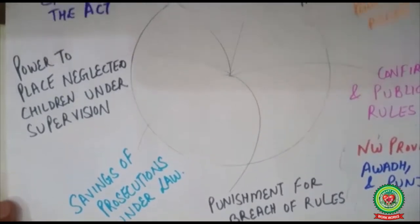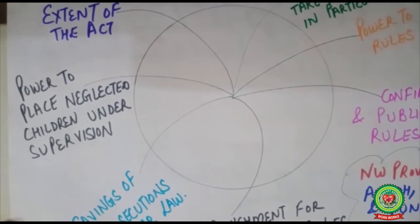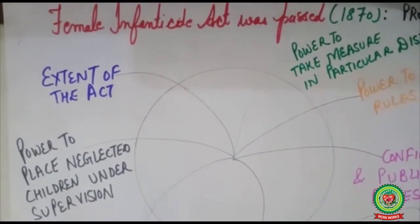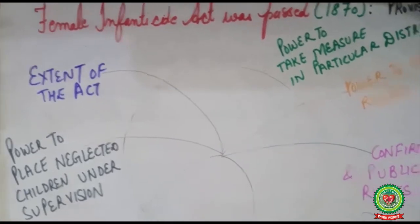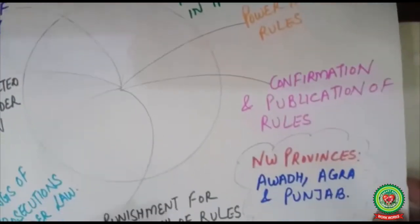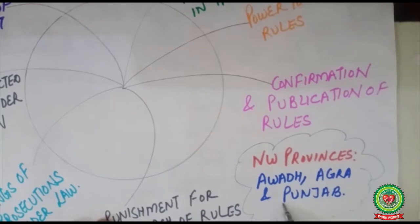The next provision was the power to place neglected children under supervision. Children who were neglected by society were to be kept under British custody. The last provision was the extent of the act — the government would decide the areas where this law would be applicable. It was decided to be applicable in North-West Provinces, Awadh (modern-day Lucknow), Agra, and Punjab.